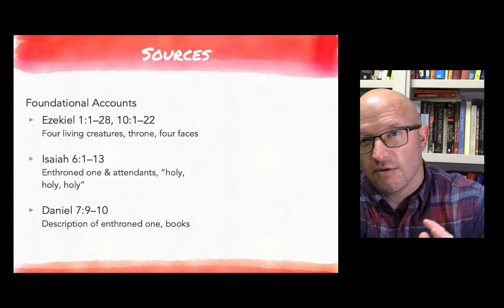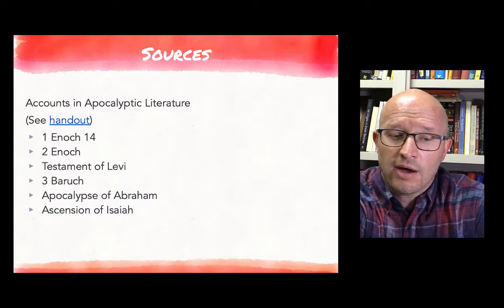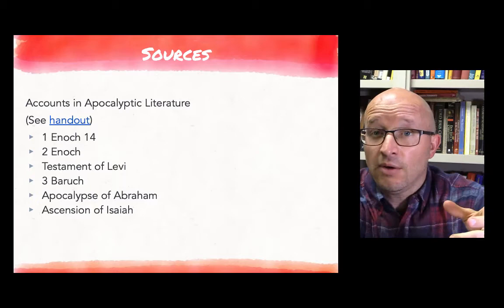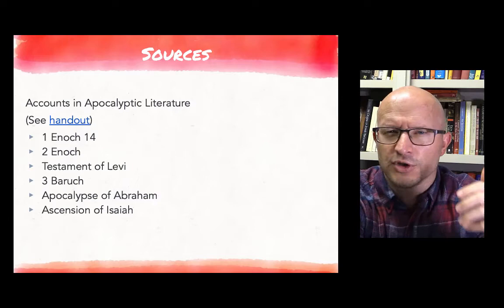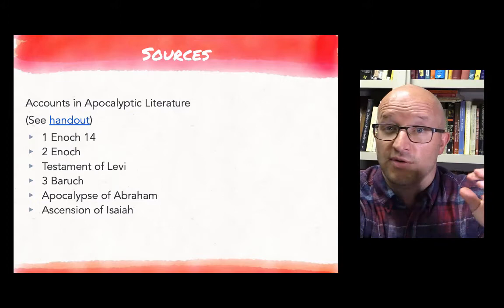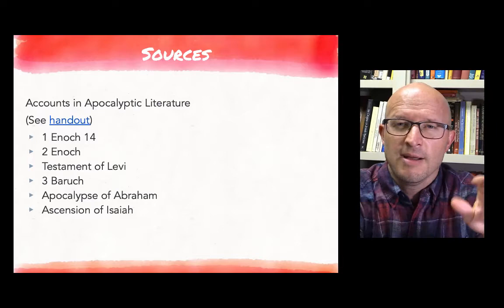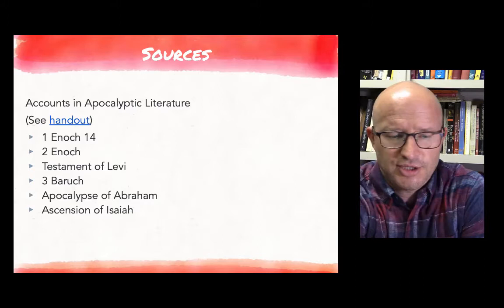If we move from those biblical examples, we can think more broadly about accounts in apocalyptic literature. I've provided a handout that I welcome you to spend some time with that provides an overview of some of these traditions. I provide the account in 1 Enoch 14 in its entirety because I think this one is really important as a connecting point from what we see in Revelation and what we saw in Ezekiel and Isaiah. It might be a midway point, if you will—not saying there's any direct dependence, but it helps us fill in the gaps or colors of what we're seeing in Revelation.